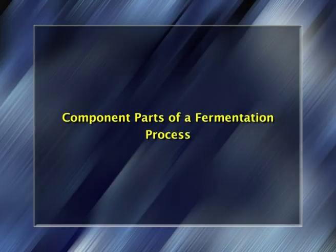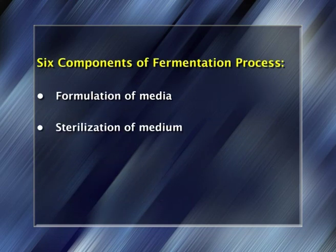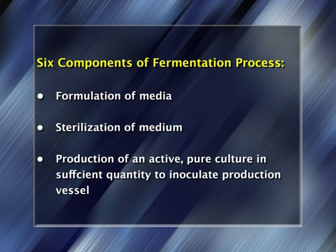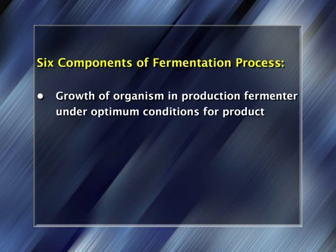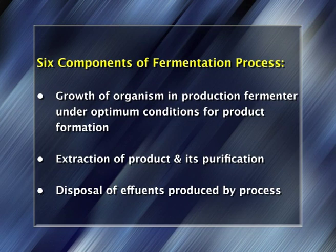Now let us start with the first part of our topic: the component parts of a fermentation process. Regardless of the type of fermentation, an established process may be divided into six basic component parts: 1. The formulation of media. 2. The sterilization of the medium. 3. The production of an active pure culture in sufficient quantity to inoculate the production vessel. 4. The growth of the organism in the production fermenter under optimum conditions for product formation. 5. The extraction of the product and its purification.